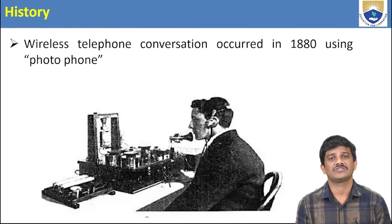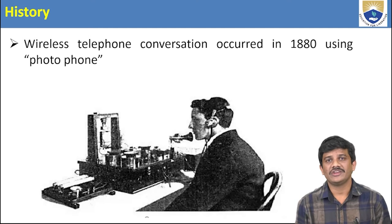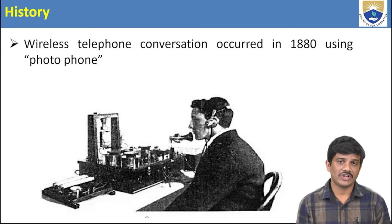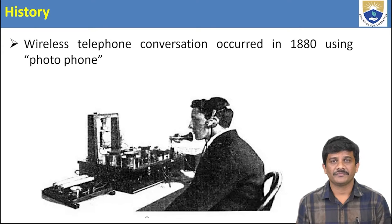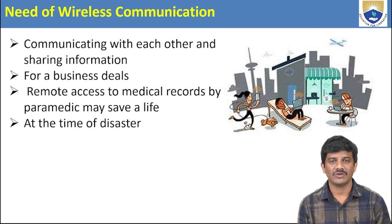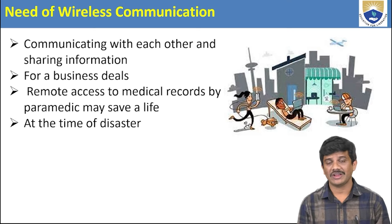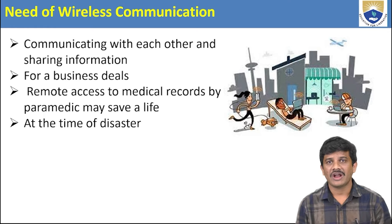Here is a brief history of wireless communication. It was used as early as 1880 — that is the photo phone. At that time, they were already using wireless telephone conversation. The need for wireless communication is that we can communicate with each other and share information.